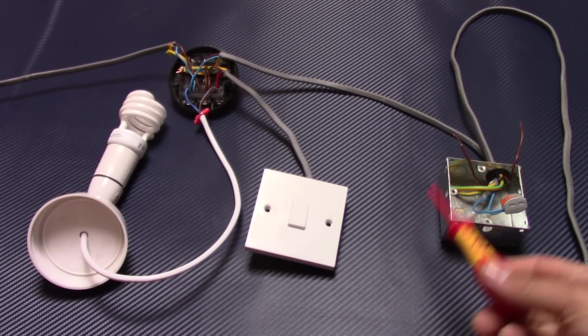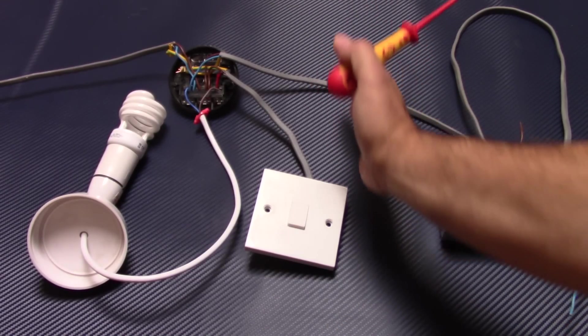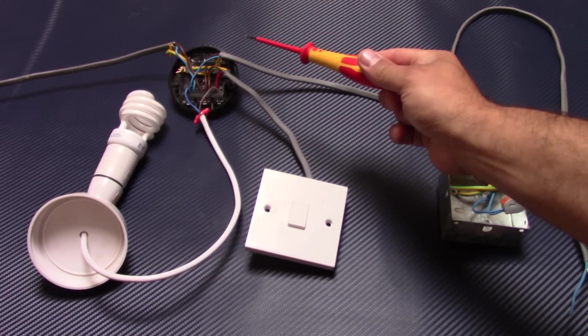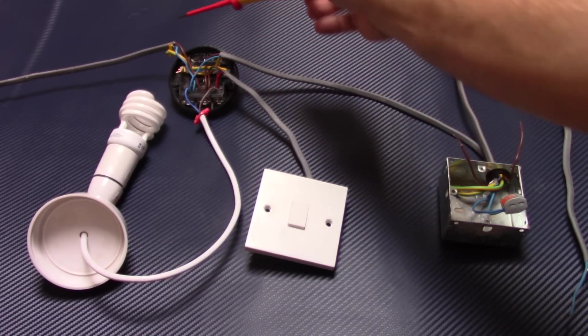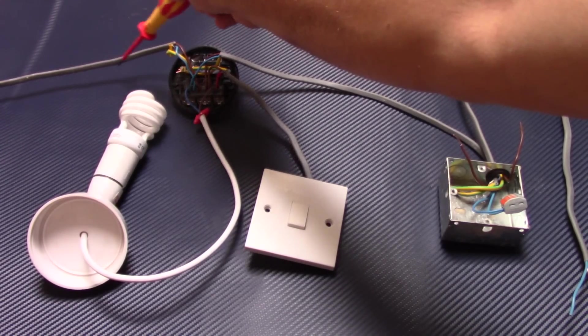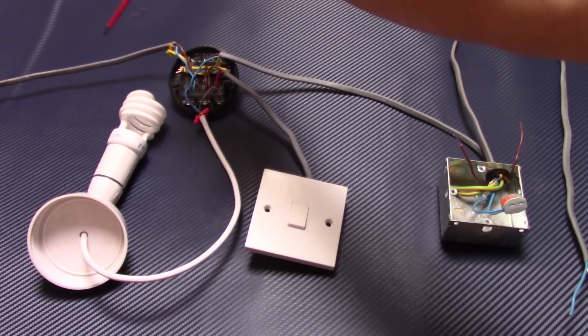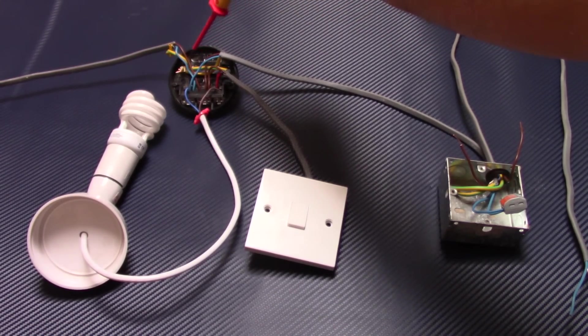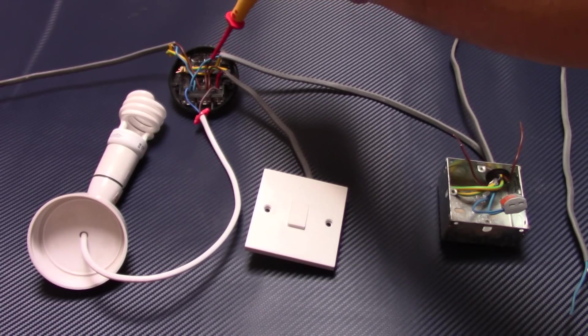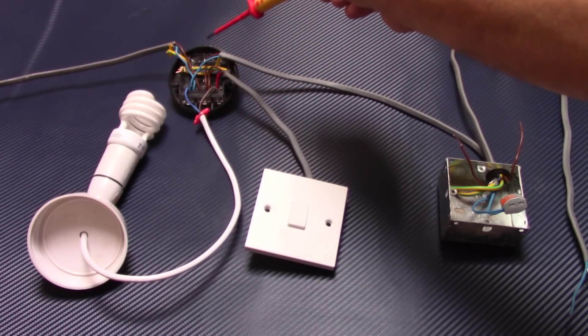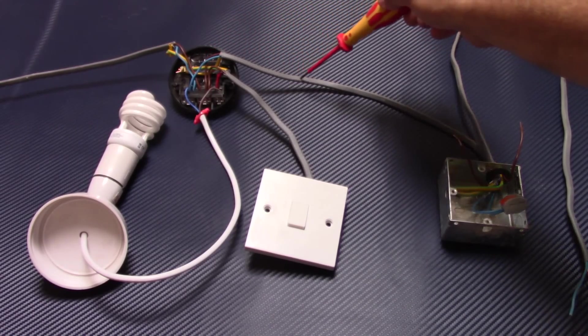Just imagine this bit is in one room. So obviously there's the ceiling rose connection, there's the cable from the other room or consumer unit going into the ceiling rose, and then obviously split here for the switch, for the light fittings, and this cable is going to another room.